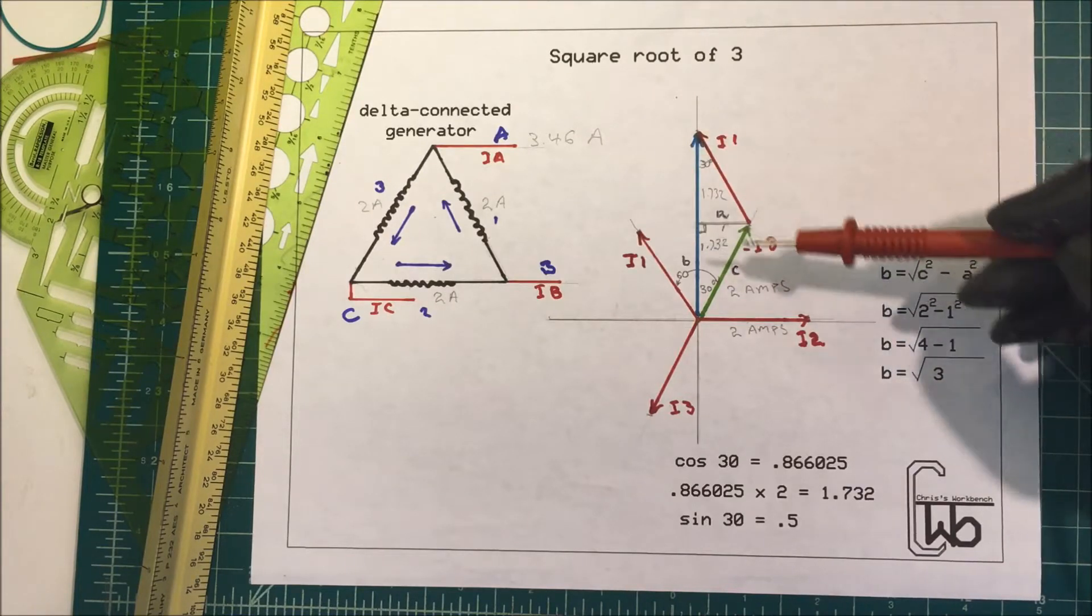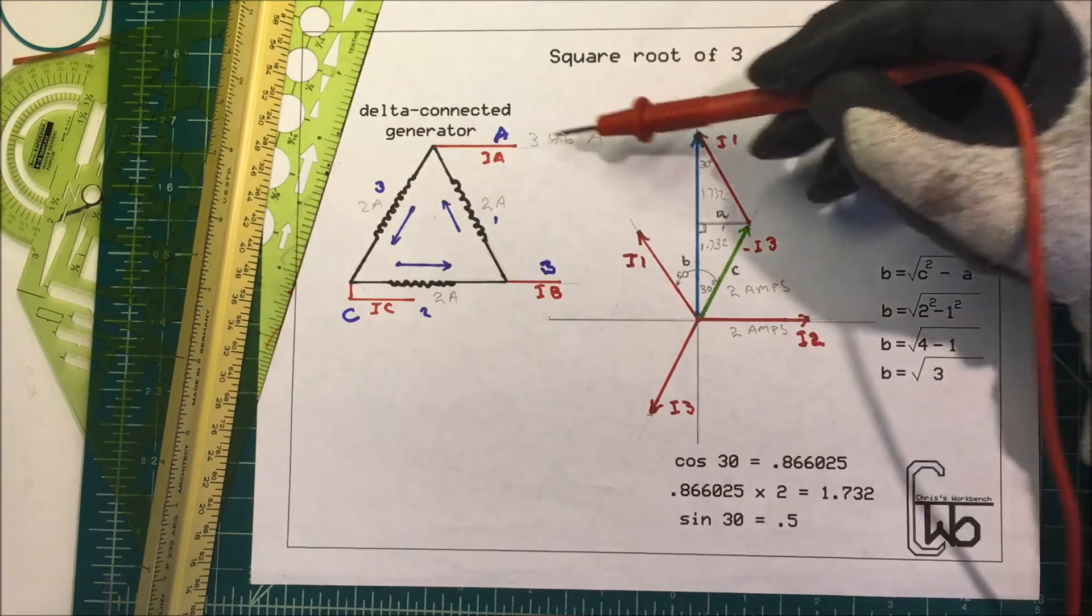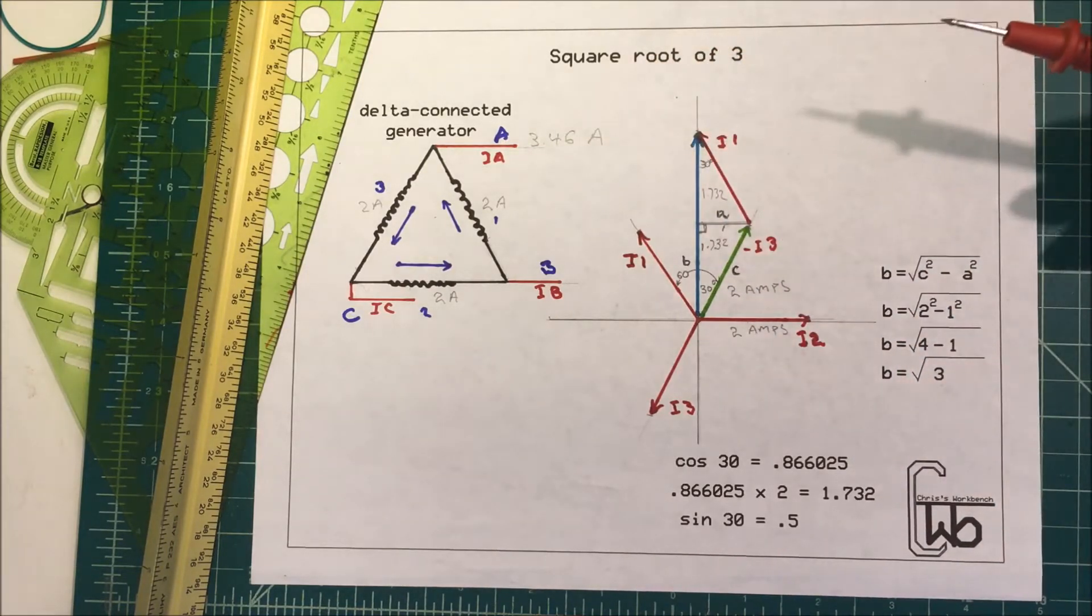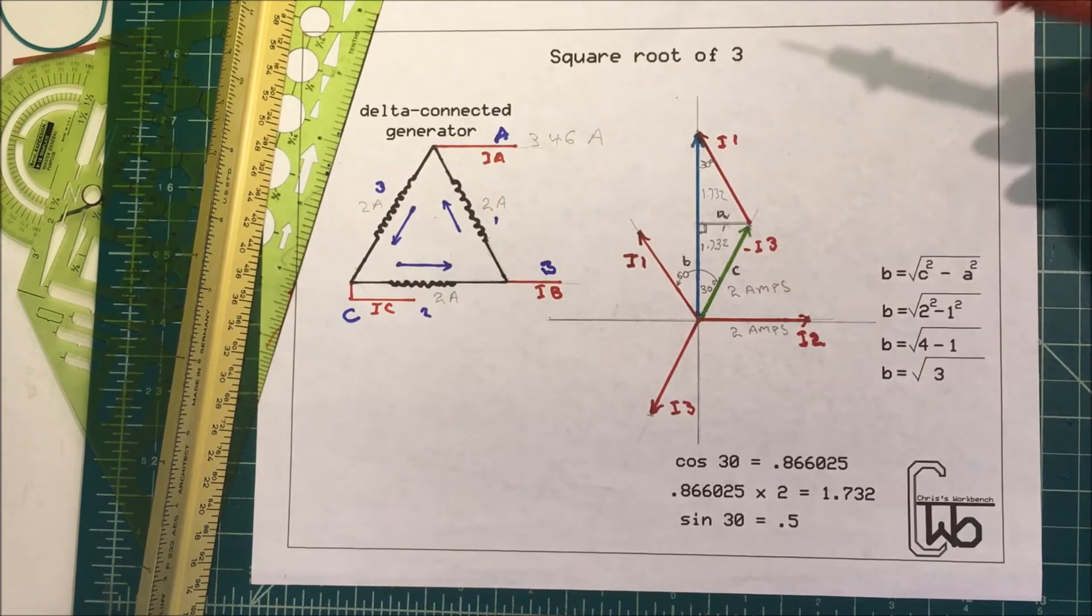We can just add those together to get our answer, or we can take the square root of three times the current in the coil and we come up with 3.46 amps coming out of the generator. That's where we get the square root of three, but we just memorize the 1.732. Thank you.